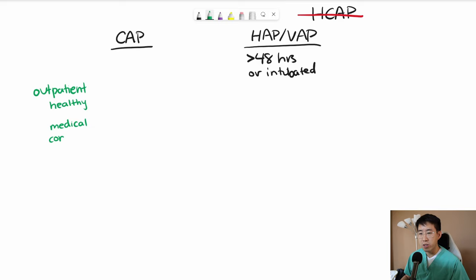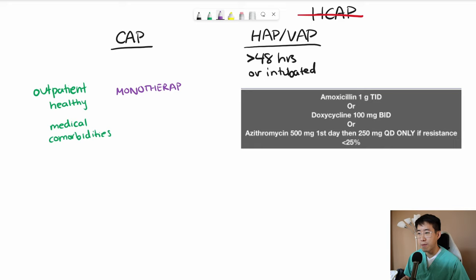So if they're completely healthy, then we do what's called monotherapy. And so that would be monotherapy with either a beta-lactam, doxycycline, or macrolide like azithromycin.